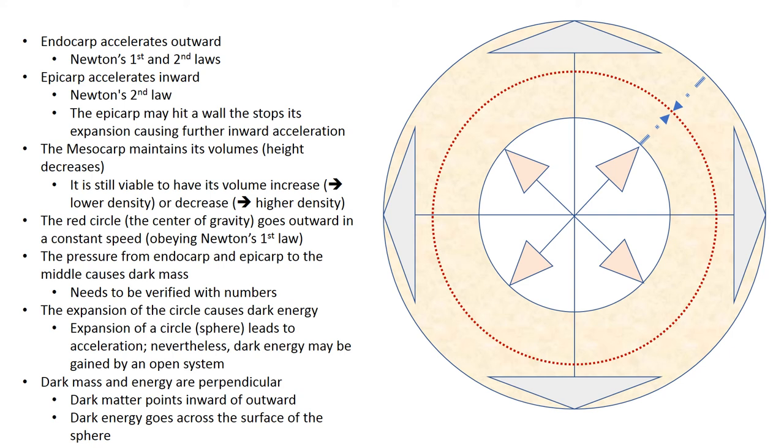And let's what, so the pressure from endocarp and epicarp to the middle cause dark matter which is actually forcing things to stick together. Meanwhile the expansion of the circle and it is growing larger and larger with time actually it leads to acceleration which we may say it is kind of dark energy.